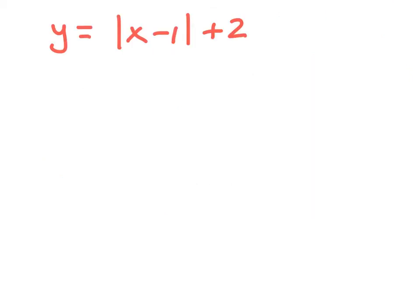Here we have y equals the absolute value of x minus 1 plus 2. We notice right off the bat that there's nothing right here, so that tells us that there is no reflection. We can also look at the horizontal shift. We see x minus 1, the absolute value of x minus 1, and that tells us to shift to the right 1 unit.